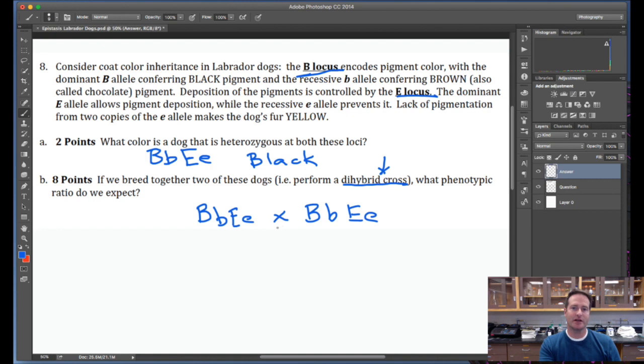If you recall, there are four phenotypic categories that occur in a typical dihybrid cross. What I suggest when you work an epistasis problem that involves a dihybrid cross is write them down using the allelic nomenclature that is pertaining to the particular problem. In this case, I'm saying write it down in terms of B's and E's. The four phenotypic categories are some form of double dominant. Remember we use these dashes to indicate that. So this could be big B, little b, or big B, big B. It doesn't matter. The phenotype is the same.